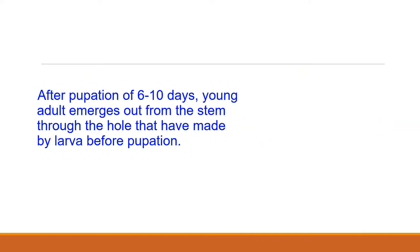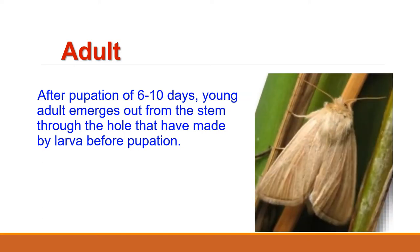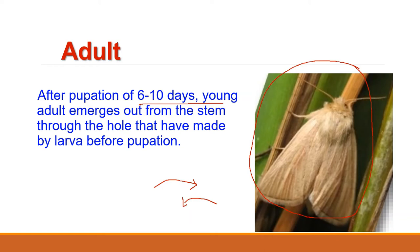Finally, the pupae metamorph into the adults. After pupation of 6 to 10 days in normal conditions, or up to 14 days in tough conditions, the young adult emerges out from the stem through holes made by the larvae. In this figure you can see the complete life cycle of Sesamia inferens.